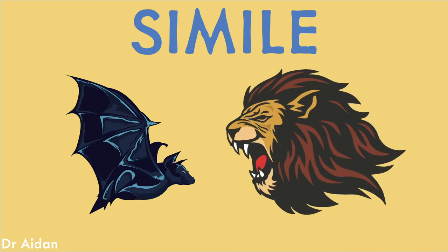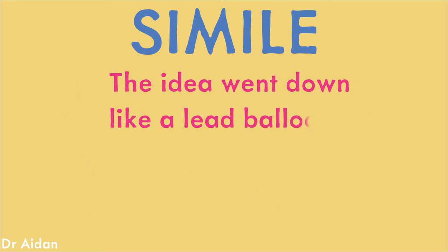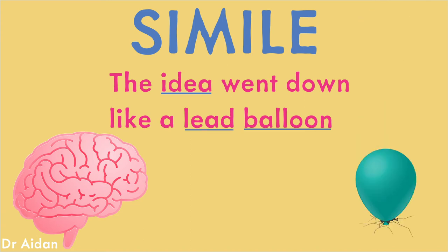But there are other slightly more complex examples such as the idea went down like a lead balloon. This simile yokes together two dissimilar things, an idea and a balloon, but then takes a balloon's normal quality — being light and perhaps floating upwards — and adds an imagined quality, a balloon being made of lead. So the balloon falls instead of floats and quickly communicates the idea that the idea went down very badly.